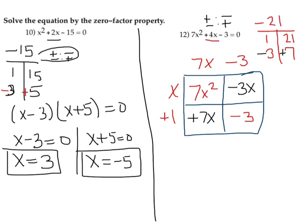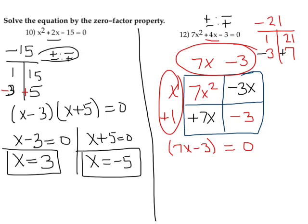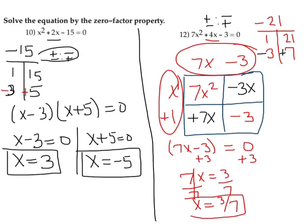So, I have two factors. And I'm going to set each of them equal to 0. So this right here and this right here. 7x minus 3 equals 0. I add 3 to both sides. I have 7x equals 3. Divide both sides by 7. I get x equal to 3 7ths. There's my first answer.